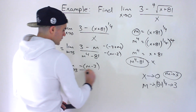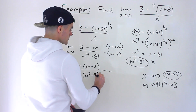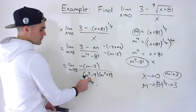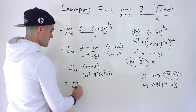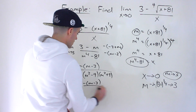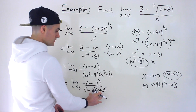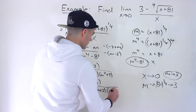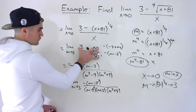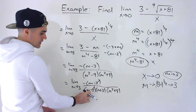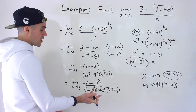Taking out a negative from the numerator, notice m to the 4th minus 81 is a difference of squares: m squared minus 9, times m squared plus 9. The m squared minus 9 doesn't factor further — wait, it does: that's a further difference of squares. So we get the limit as m approaches 3 of negative times m minus 3, all over m minus 3, times m plus 3, times m squared plus 9. The m minus 3 terms cancel out. If you left the numerator as 3 minus m, you'd take the negative out of the denominator factor and those two would cancel the same way.